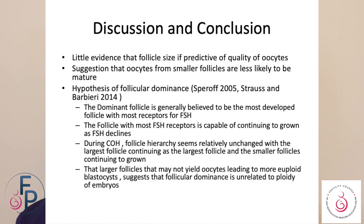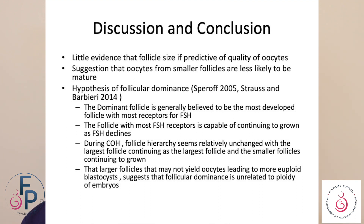This small study tells us that while follicle size may not predict the quality of oocytes, it suggests that middle-range follicles may produce mature oocytes. Looking at the concept of follicle dominance — which is quite old but still relevant — the dominant follicle is believed to be the most developed follicle with the maximum number of FSH receptors, and the follicle with the most FSH receptors is the one that will continue to grow.